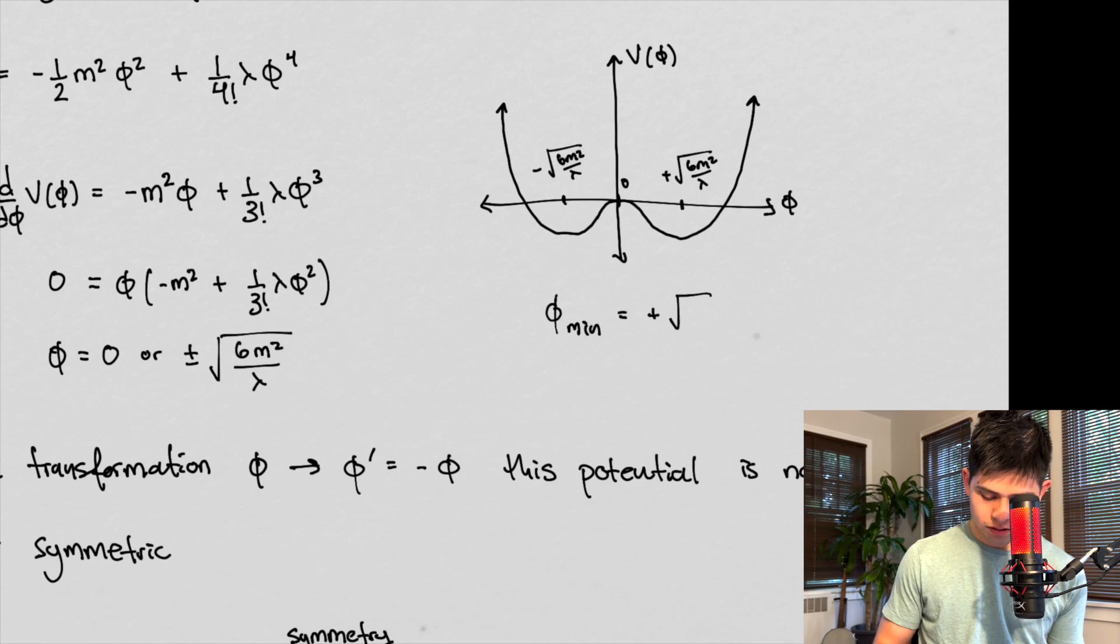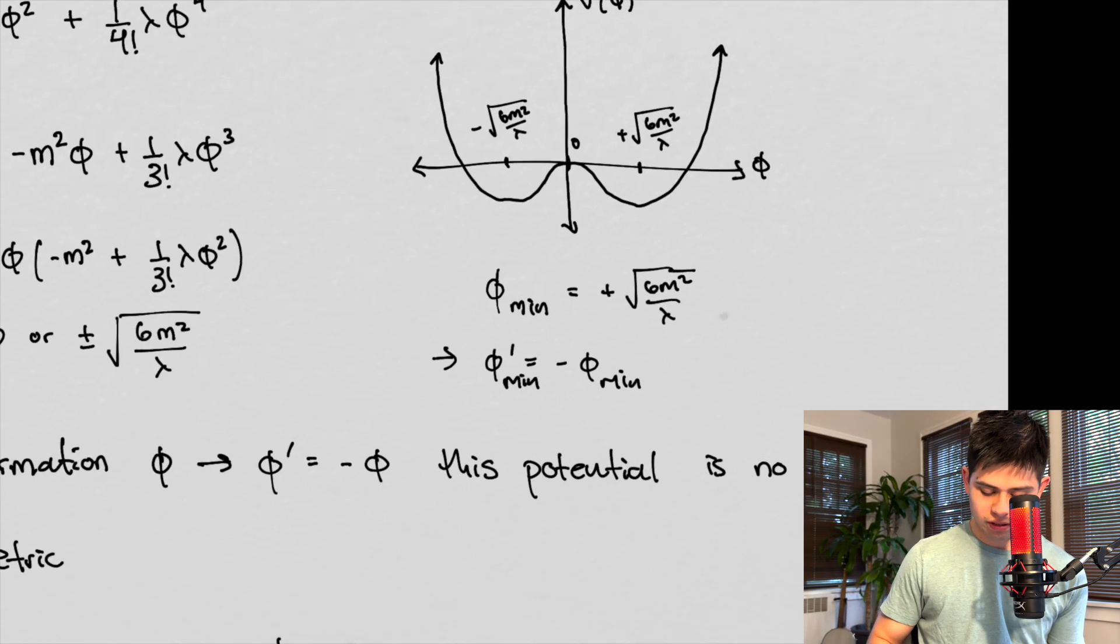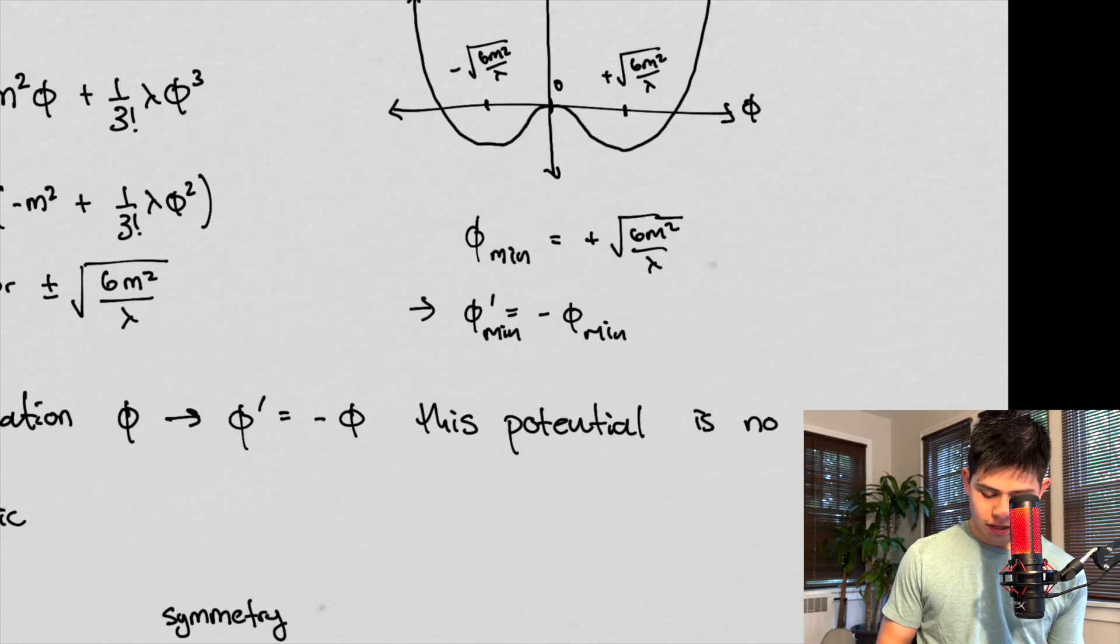if the minimum phi in this case is equal to plus 6m squared over this, over our coupling constant, our new phi, and our new phi is equal to the negative of our original, this is the transformation. This is just a simple transformation. And this means that phi, the new phi min is equal to negative 6m squared over pi.